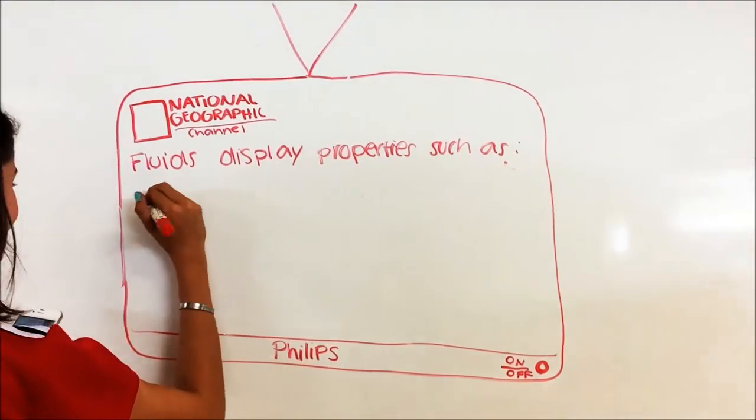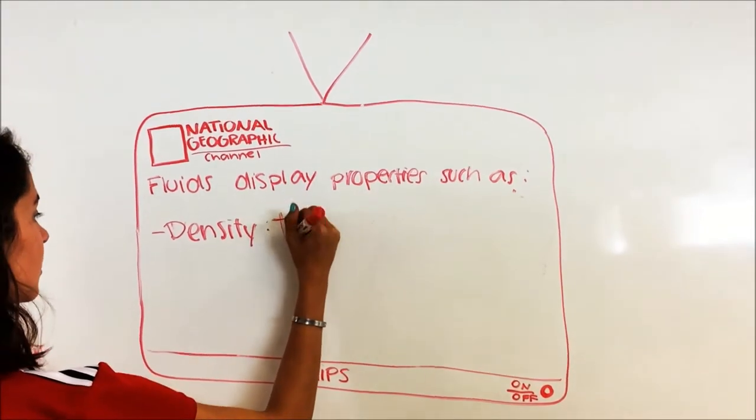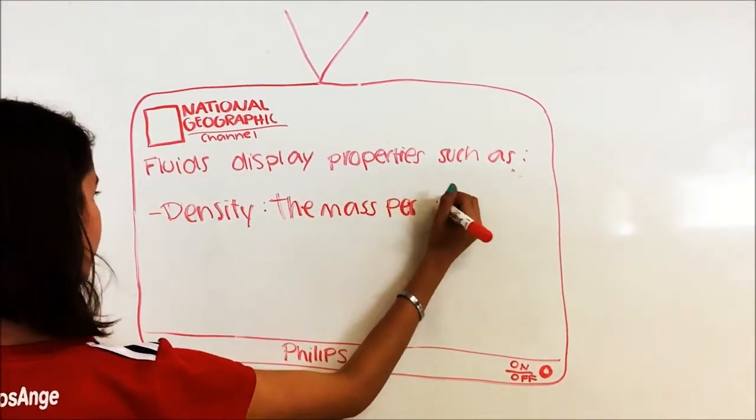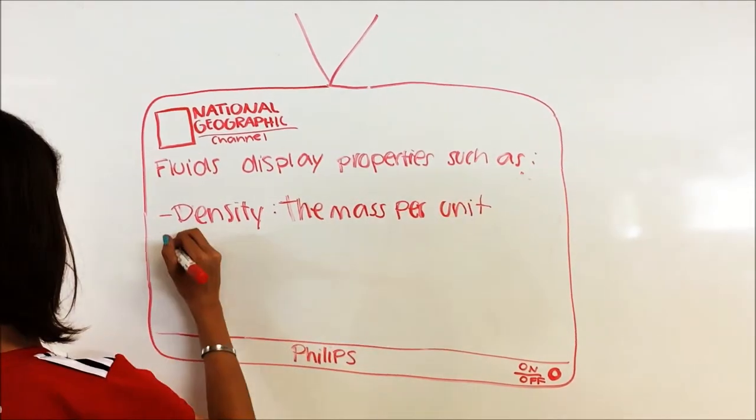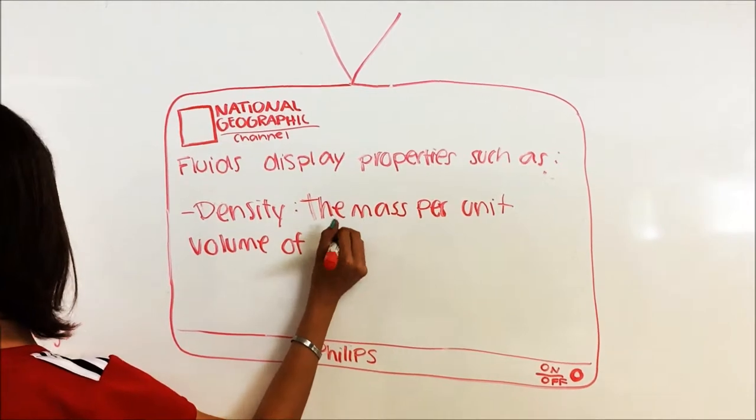The density of a fluid is defined as the mass of the fluid over an infinitesimal volume if the fluid is assumed to be uniformly dense.